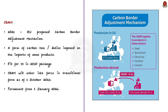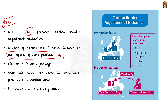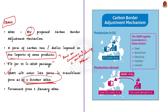What is CBAM? In 2021, the European Union proposed the CBAM mechanism. It is a form of carbon tax or duties imposed on the import of some products, based on the amount of carbon emitted during the production of such products. CBAM is part of the 'Fit for 55 in 2030' package of the EU, which aims to reduce greenhouse gas emissions by at least 55% by 2030 compared to 1990 levels. CBAM entered into force in transitional form on 1 October 2023, and the permanent system will enter into force on 1 January 2026.